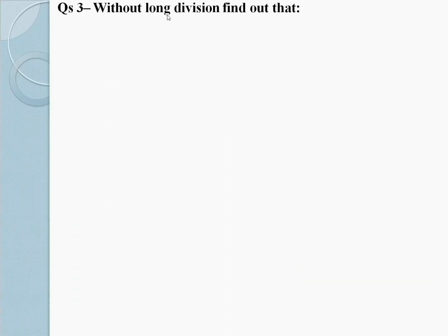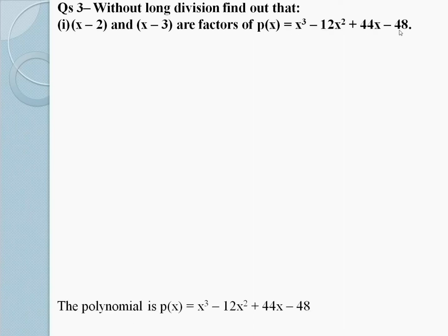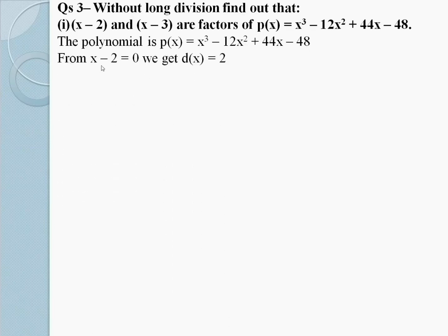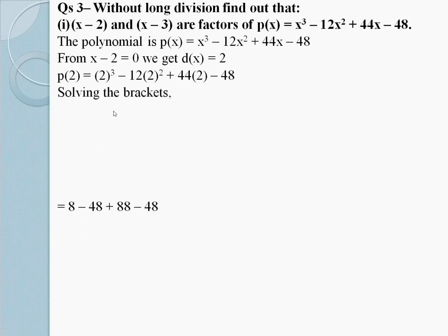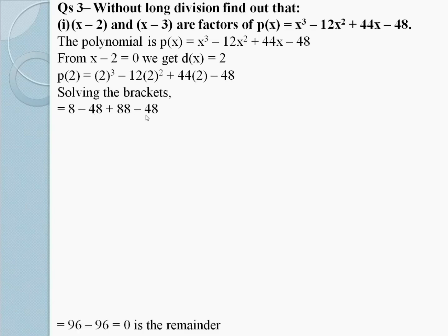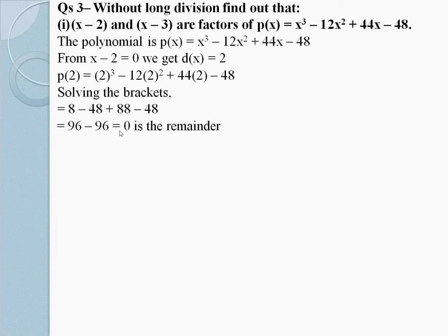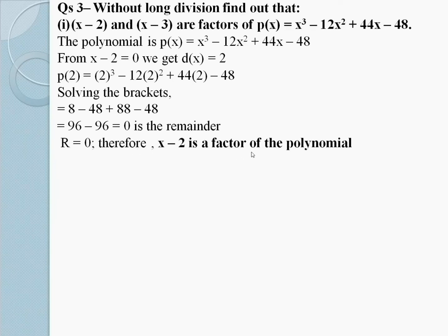Question number 3: Without long division, find out if x - 2 and x - 3 are factors of P(x) = x³ - 12x² + 44x - 48. From x - 2 = 0, we get x = 2. P(2) = 2³ - 12(2)² + 44(2) - 48. Solving: 8 - 48 + 88 - 48 = 96 - 96 = 0. Since r = 0, therefore x - 2 is a factor of the polynomial.